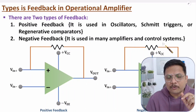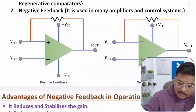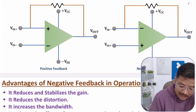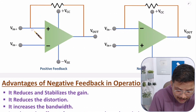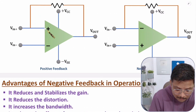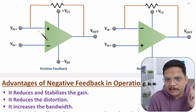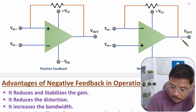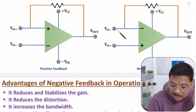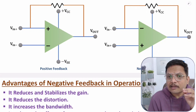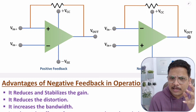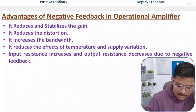Let me explain how positive and negative feedback are given with an operational amplifier. With positive feedback, the output is fed back to the positive terminal — that is, the non-inverting terminal. With negative feedback, the output is fed back to the input side at the negative terminal — that is, the inverting terminal. We usually use negative feedback because of its many advantages.